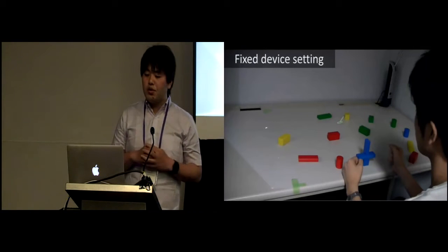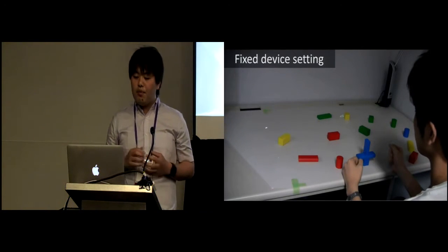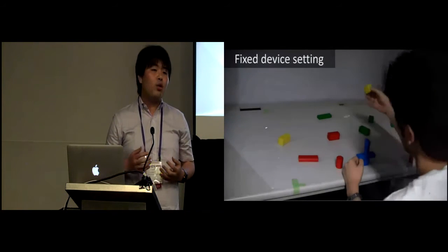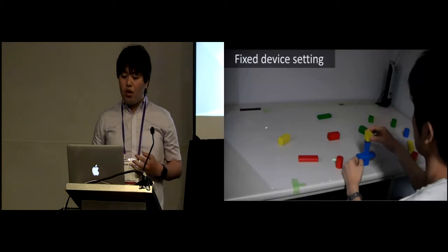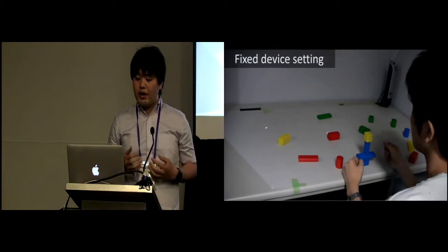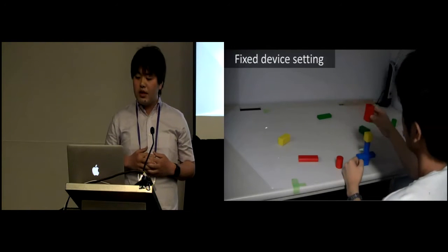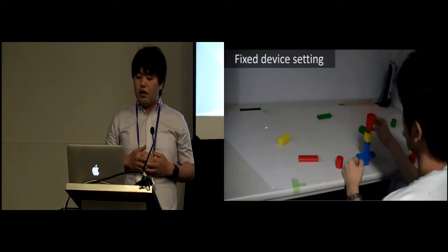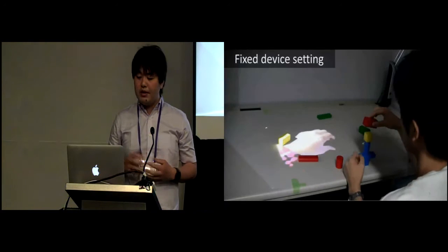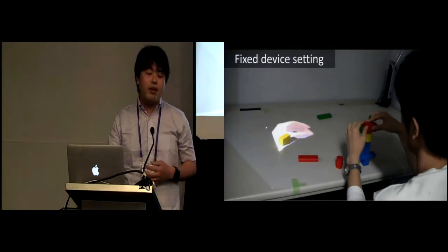This video shows the fixed device setting. The system visualizes collaborator's gaze position and their trails. When the collaborator points out blocks to instruct an assembling task, the system also displays hand gestures of the collaborator on the workspace. The worker and the collaborator can also talk to each other by audio.